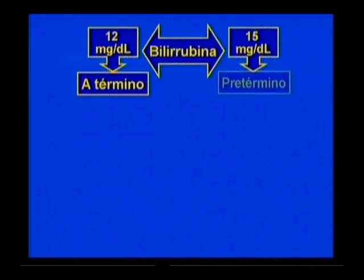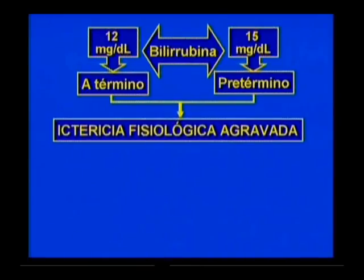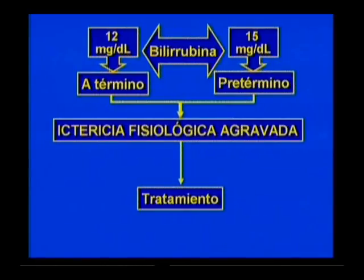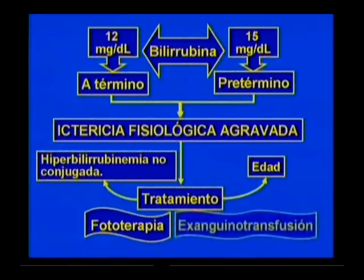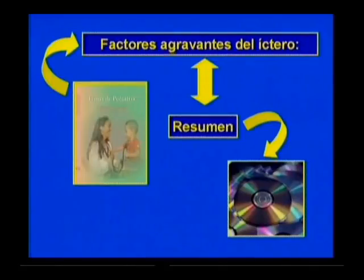Cuando las cifras de bilirrubina se encuentren por encima de 12 mg/dL en el neonato a término o de 15 mg/dL en el pretérmino, la ictericia se denomina ictericia fisiológica agravada, la cual siempre requiere tratamiento. Este dependerá de la intensidad de la hiperbilirubinemia no conjugada y de la edad del paciente. Dentro de los pilares del tratamiento se encuentran la fototerapia y, en casos necesarios, la exanguineotransfusión. Se recomienda revisar en el libro de texto los factores agravantes del ictero y apoyarse en la galería de imágenes del CD de la asignatura.